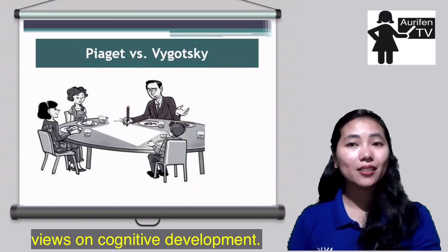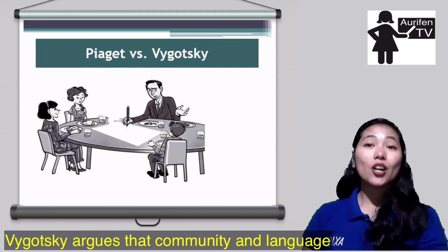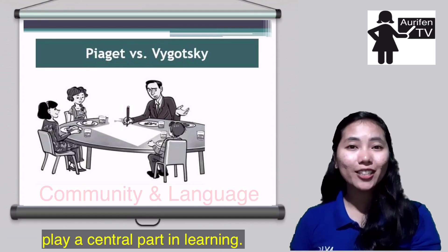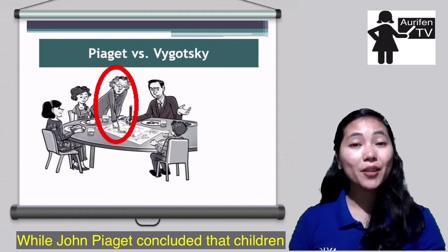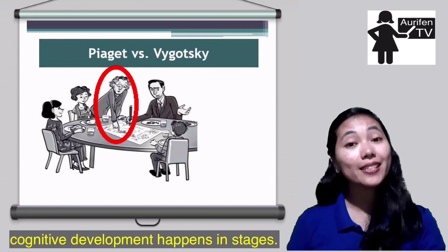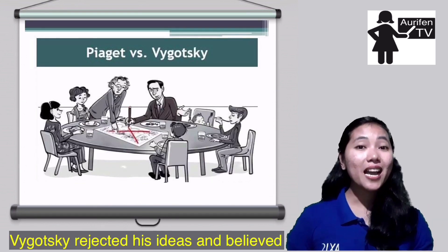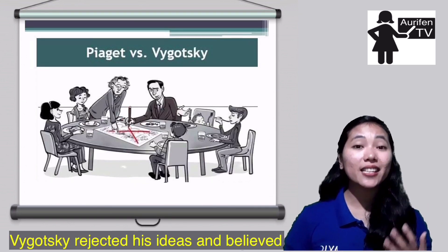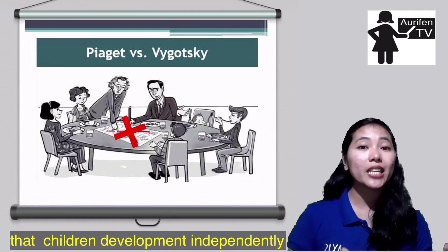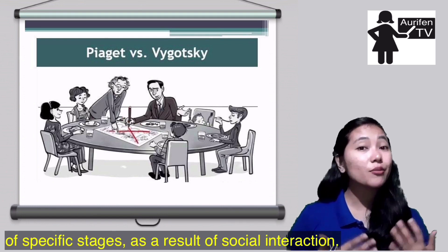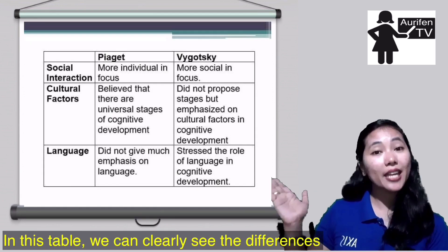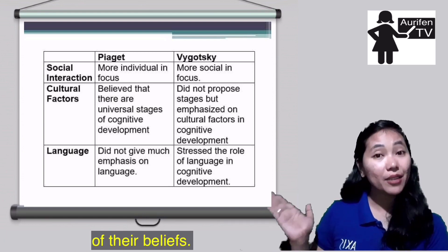Next, let's differentiate Piaget and Vygotsky's views on cognitive development. Vygotsky argues that community and language play a central part in learning, while Jean Piaget concluded that children's cognitive development happens in stages. Vygotsky rejected his ideas and believed that children develop independently of specific stages as a result of social interaction.